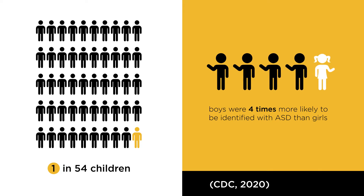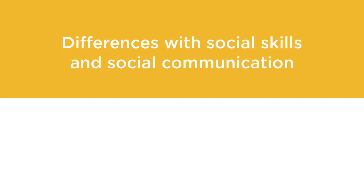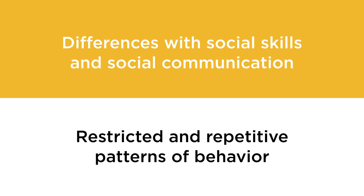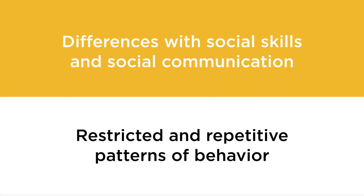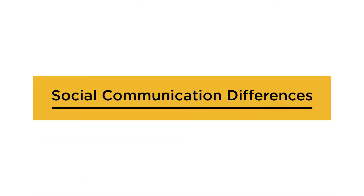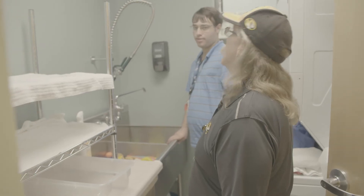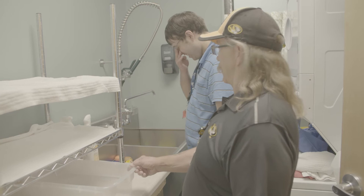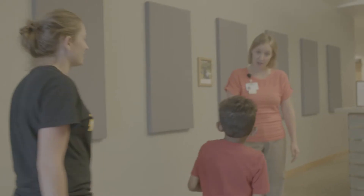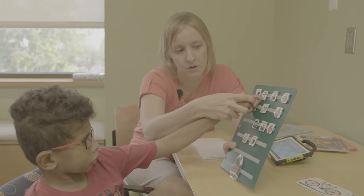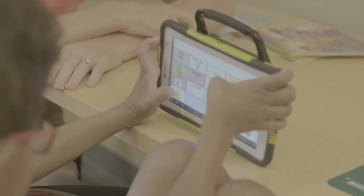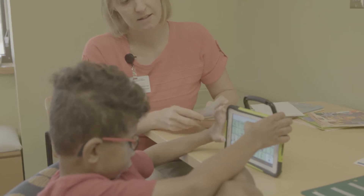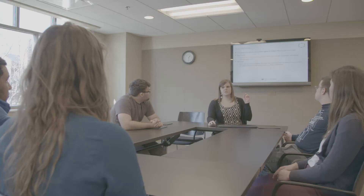Every individual with autism is unique, which is why it is called the autism spectrum. However, all people with autism have aspects of the following two characteristics: differences with social skills and social communication, and some atypical behaviors called restricted and repetitive patterns of behavior. The social communication differences associated with autism can present in a variety of ways. For example, you may notice things like a lack of exchange of greeting, a difference in eye contact while speaking, or you may experience a conversation that feels off-topic or is challenging to follow. Some individuals with autism may have limited verbal language and instead may use pictures, sign language, or technology to support their communication. Other individuals with autism develop strong language skills but may struggle with some social situations.